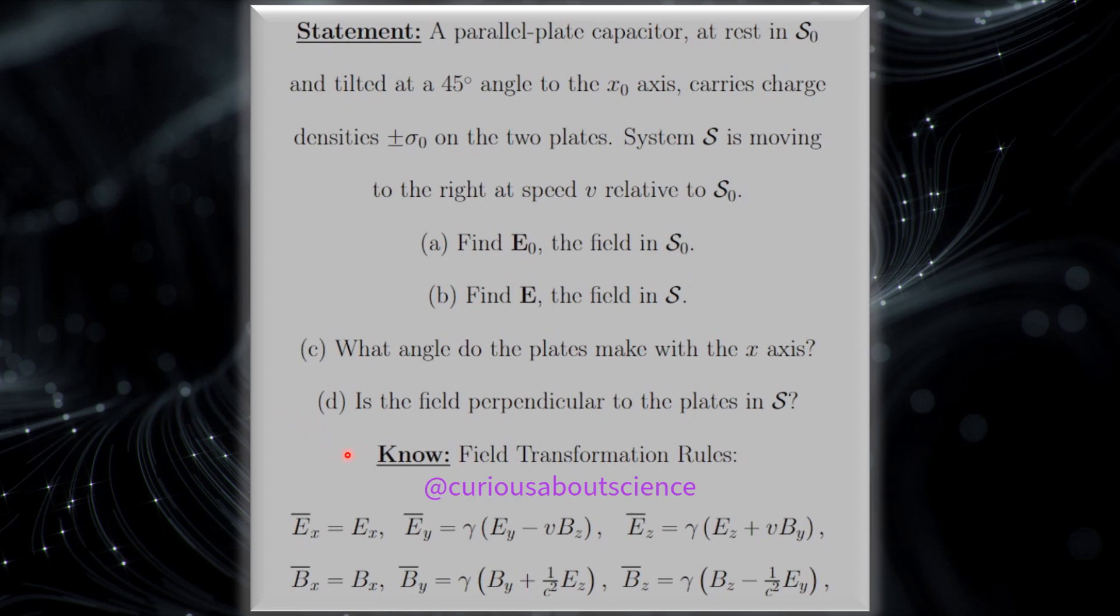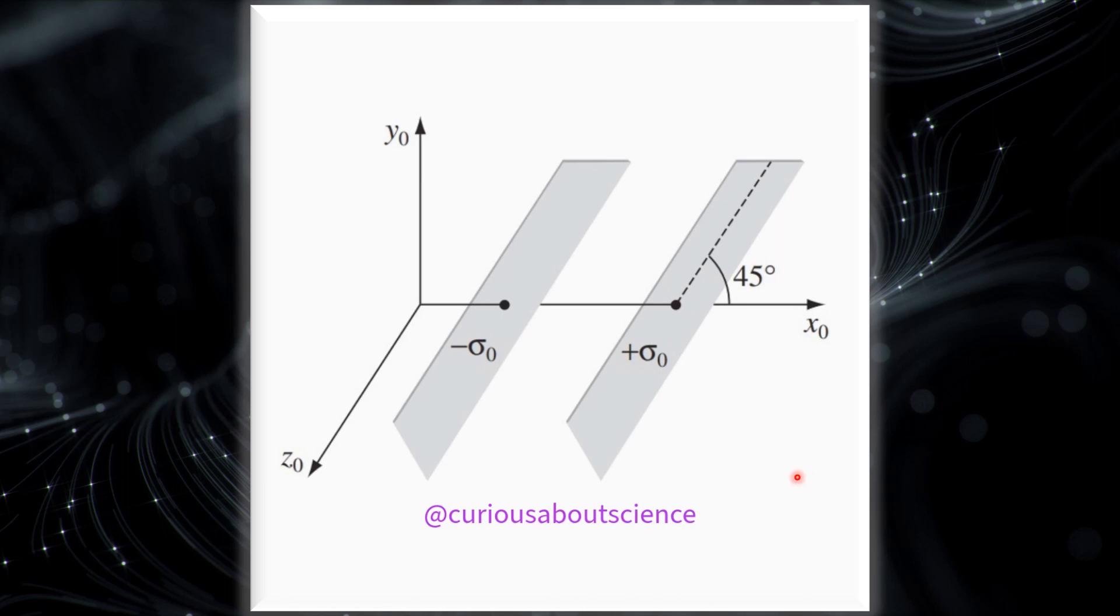Alright, so what we know is the field transformation rules. E_x bar goes to E_x, E_y transforms, E_z transforms, B_x, B_y, and then B_z into this. So we have everything we need there. Let's go ahead and draw it out. So as stated, we have two plates that are tilted at 45 degrees to the x-axis. We're moving this way. Let's see what we need to do in order to tidy this up.